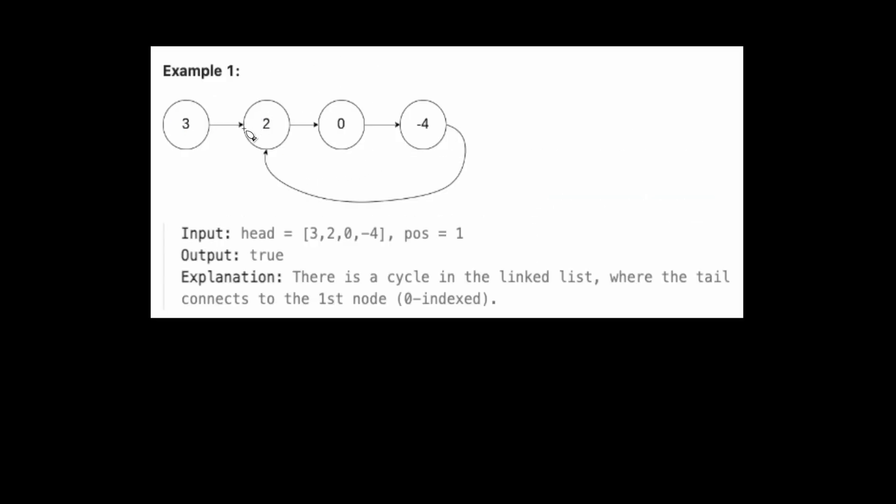Let's take this linked list. This is the head of the list. If we keep traversing this linked list, we can see that we're going to go back to two and there's going to be a cycle which is never going to be ending.